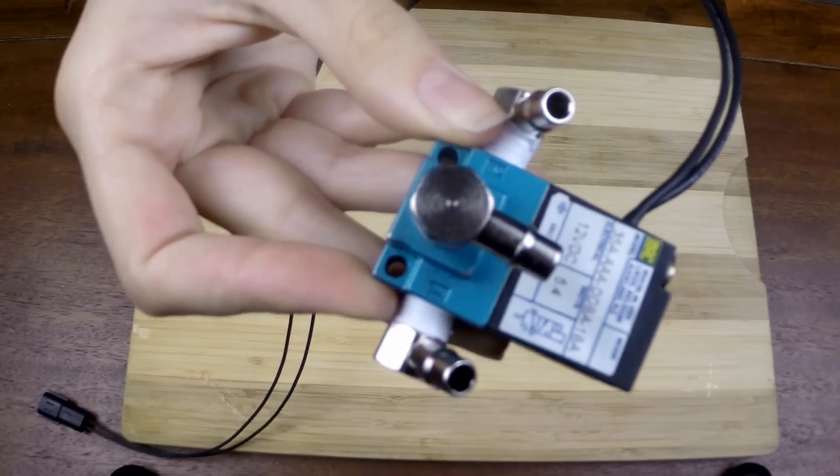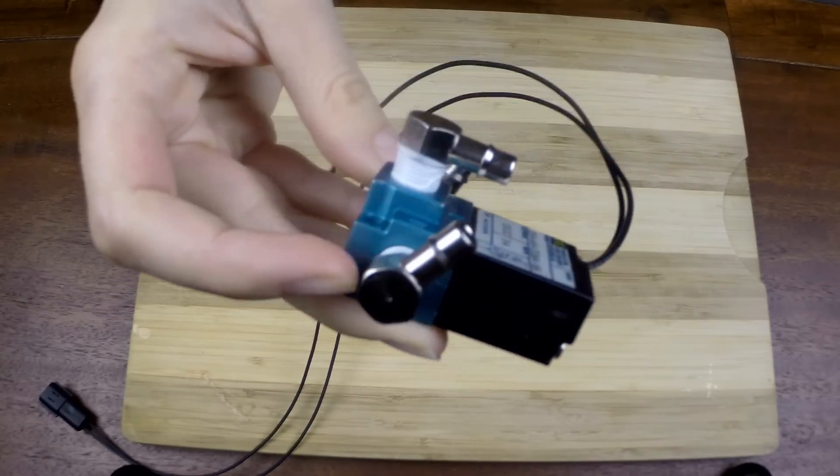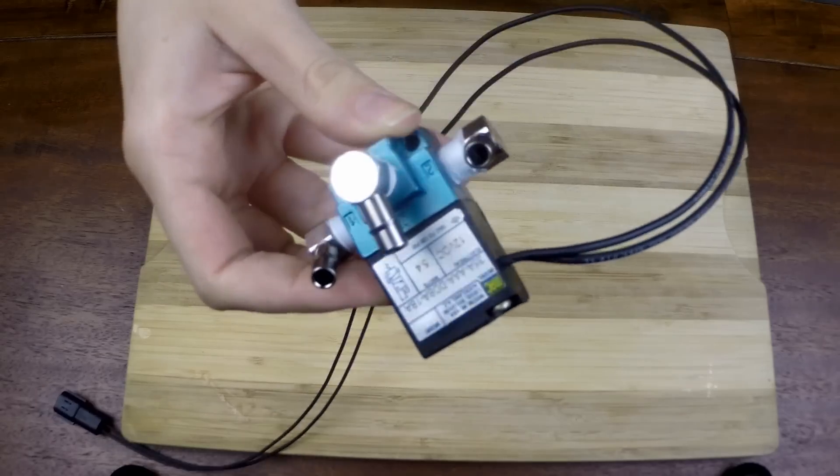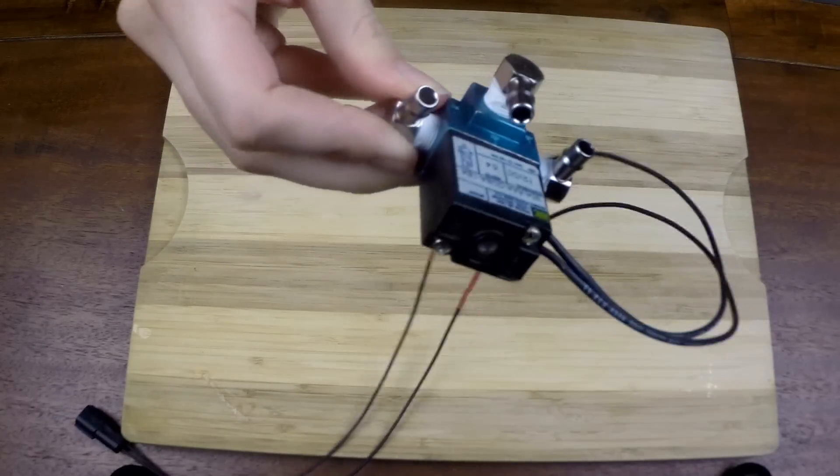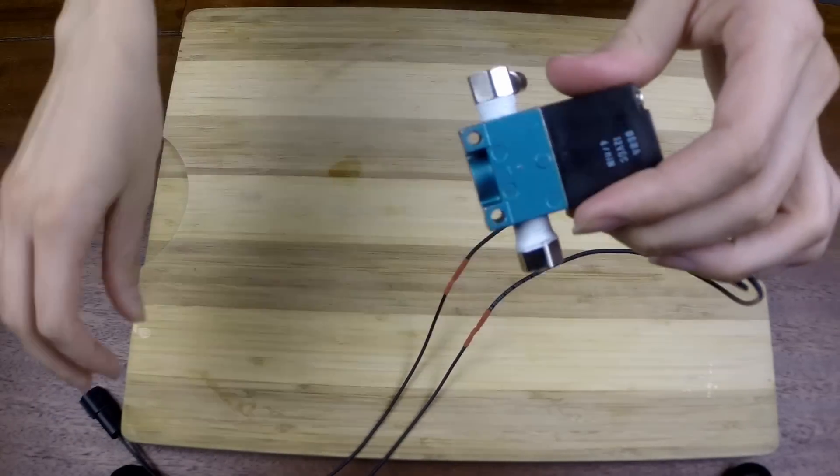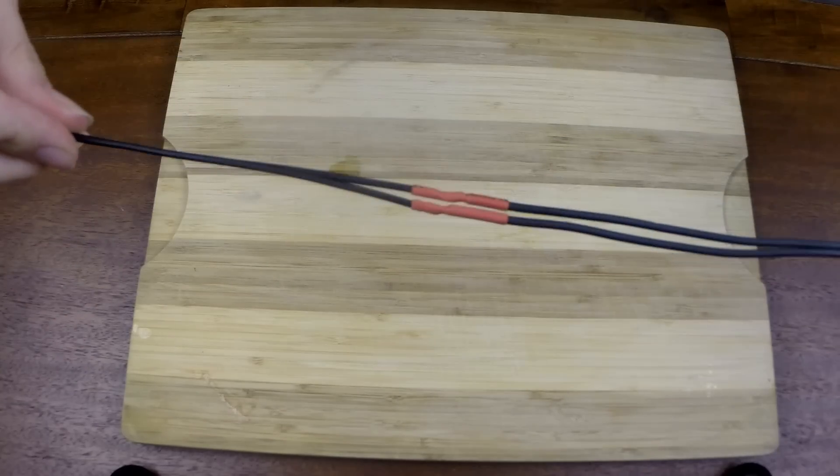This is what your completed electronic boost control solenoid should look like. We currently have this set up for 3 port mode, but to run the solenoid in 2 port mode simply block the middle port with an appropriate size bolt.